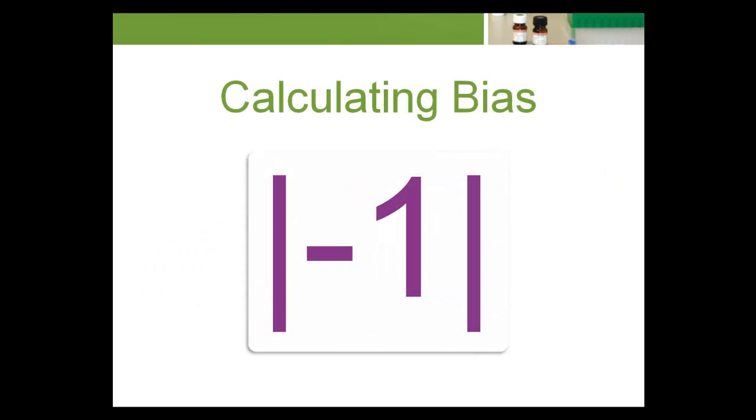When we use bias in the equation to calculate for TE, we only use absolute values. So any signs, negative or positive, are dropped.